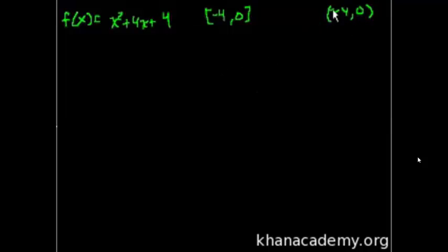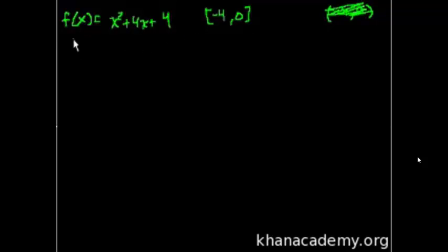This is called an open interval. You could ignore that because that's not what was in the problem. So the first thing they ask is: what are the critical points? Different people use different terminology, but my understanding is critical points are all the points that are interesting — the points where the derivative is equal to 0, or the derivative just doesn't exist. Let's take the derivative.